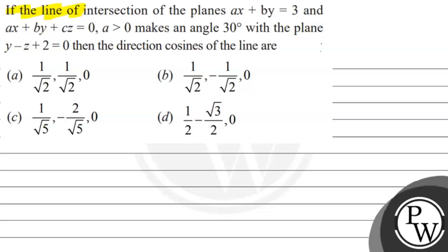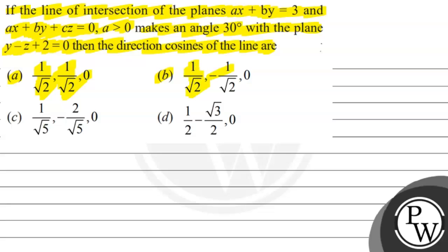Hello, let's see the question. If the line of intersection of the plane AX plus BY equals C and AX plus BY plus CZ equals 0, with A greater than 0, makes an angle of 30 degrees with the plane Y minus Z plus 2 equals 0, then what are the direction cosines of line? Options: A) 1/√2, 1/√2, 0 | B) 1/√2, -1/√2, 0 | C) 1/√5, -2/√5, 0 | D) 1/2, -√3/2, 0.